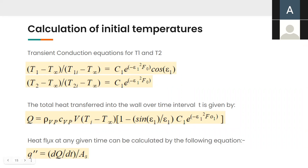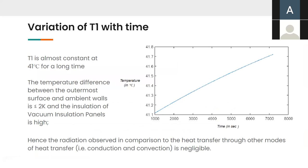So, for the initial temperatures, we use the transient conduction equations for T1 and T2. Thus, getting the heat transferred and the heat flux of the same. So, while solving this using analytical tools, we get the variation of T1 with time. We found out that the temperature T1 changes from 41.1 to 41.7 around 8000 seconds, which is not much of a change. So, we can consider it to be constant at 41 degree for a long, long time. This shows that the difference between the temperature of the vacuum insulated panel, which is T1, and the ambient temperature is very less, less than 2 degree Celsius. So, thus, our assumption that radiation is negligible is also proved here.